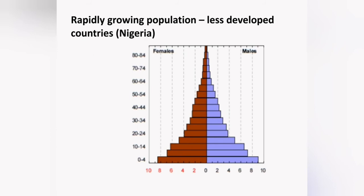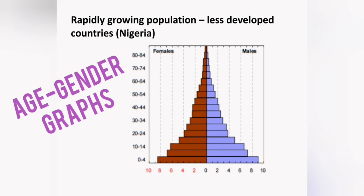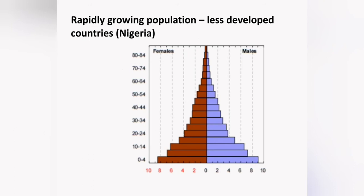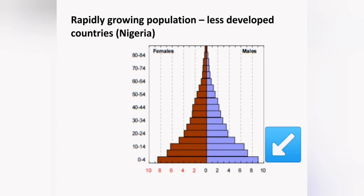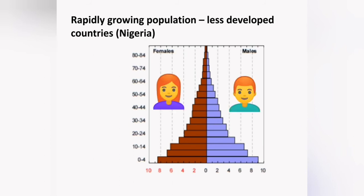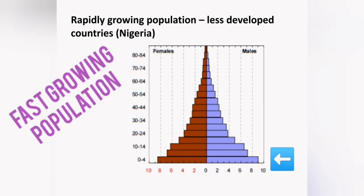Scientists use age-gender graphs to show what is happening in a country now and to predict further population growth. This specific age-gender graph is typical of a less developed country like Nigeria. On the Y-axis are different age groups, and on the X-axis are quantities of people, split by males and females. A fast-growing population in a less developed country typically shows a triangular shape, with a huge number of very young children and very few elderly people.